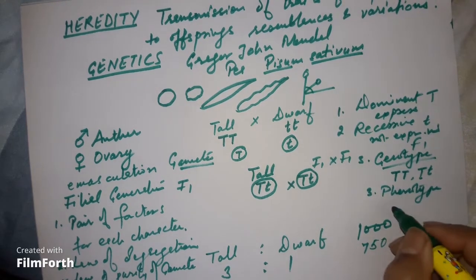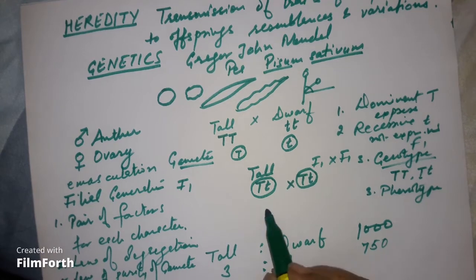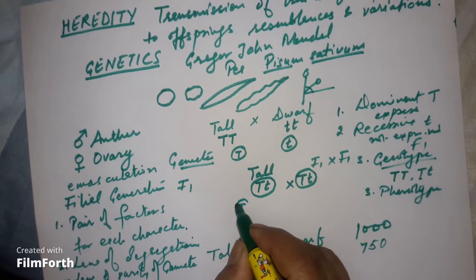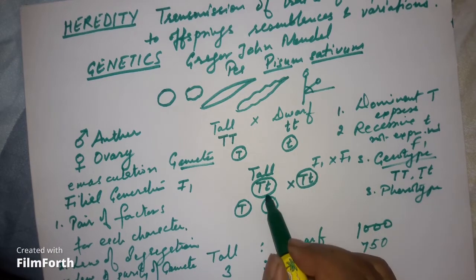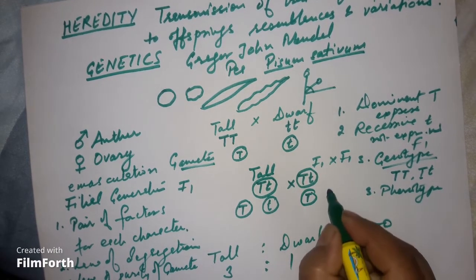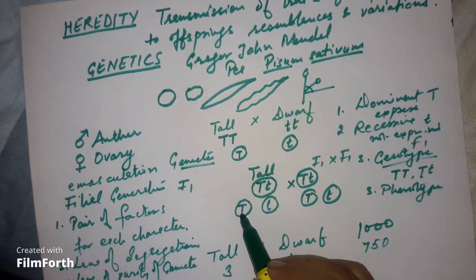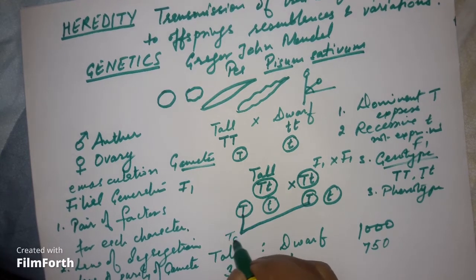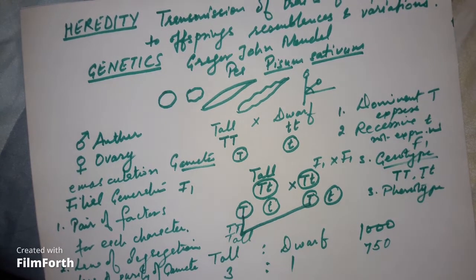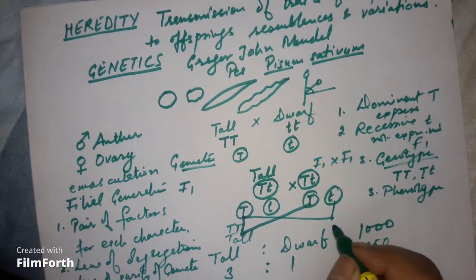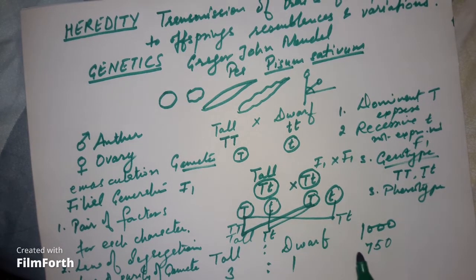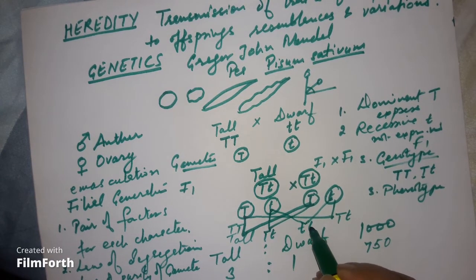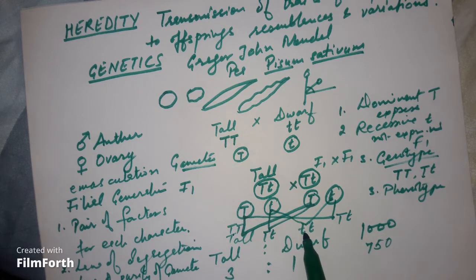The F1 individual with genotype Tt produces two types of gametes — T and t. When these gametes combine during fertilization, the possible results are TT, Tt, Tt, and tt. Three of these are phenotypically tall and one is dwarf, giving the 3:1 phenotypic ratio.